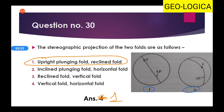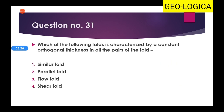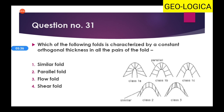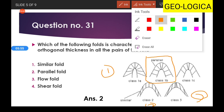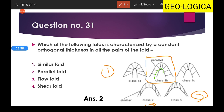Question 31 asks which fold is characterized by a constant orthogonal thickness in all parts of a fold. In Ramsay's fold classification, folds are divided into three classes: class one, class two, and class three. In class one, there is a further subdivision.